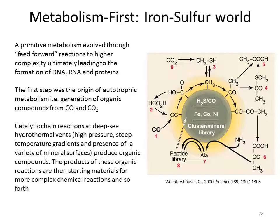In more recent years, the idea that metabolism evolved first has gained more and more support. The metabolism first model assumes that a primitive metabolism evolved first and that the products of this primitive metabolism provided the raw materials for increasingly complex reactions in a feed-forward mechanism. This would over time generate higher complexity, ultimately leading to complex biomolecules such as DNA, RNA, and proteins. In this scenario, the first step was the origin of an autotrophic metabolism — a metabolism that generates organic compounds from the inorganic precursors carbon dioxide and carbon monoxide. It is thought that this primitive metabolism evolved at a deep sea hydrothermal vent, where there is high pressure, steep temperature gradients, and a variety of mineral surfaces. Iron and sulfur-containing minerals are thought to have played a crucial role, which is why it is frequently called the iron-sulfur world.